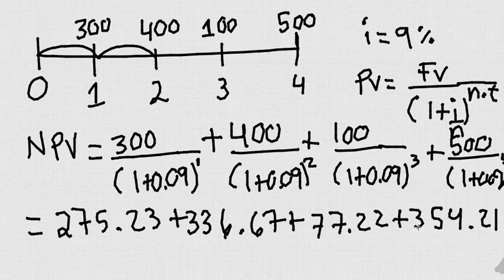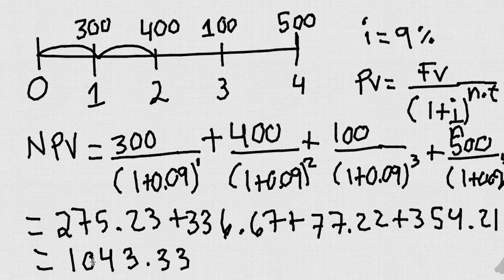Now we're going to add all these numbers, and let's see what we get, and I got 1043.33. So that is the net present value.